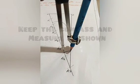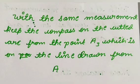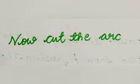After that with the same measurement, keep the compass on the cutted arc from the point A3 which is on the line drawn from A and cut the arc as it is shown.